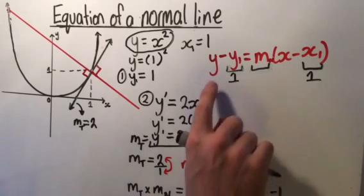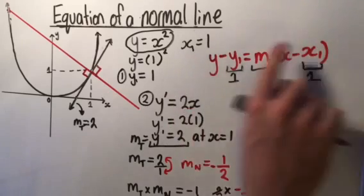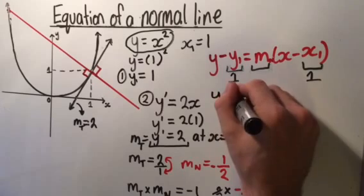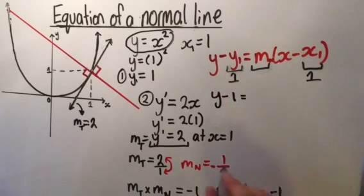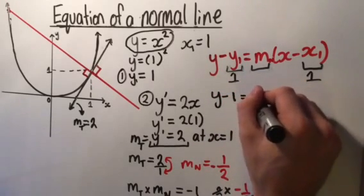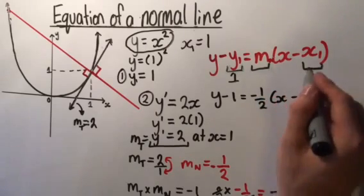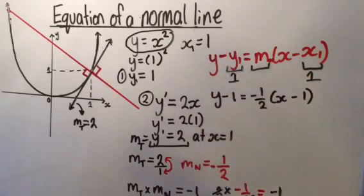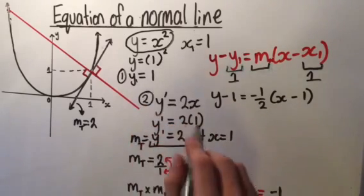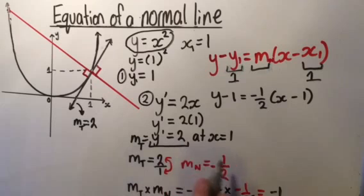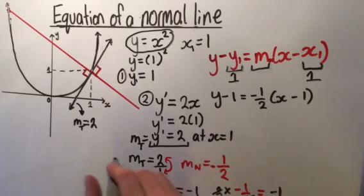Now we have the gradient, so we substitute all this information back into our equation. We get y minus 1 equals minus one half times x minus 1. All you need is the gradient, which is given by finding the derivative as if it were a tangent, then changing the gradient by flipping it and making the sign opposite.